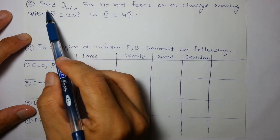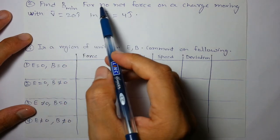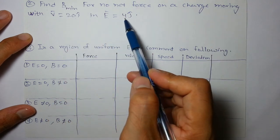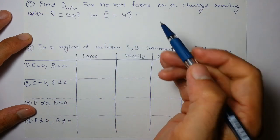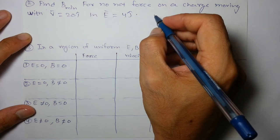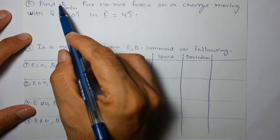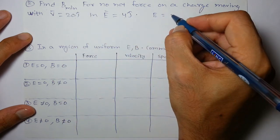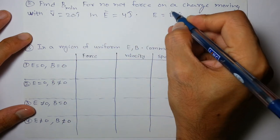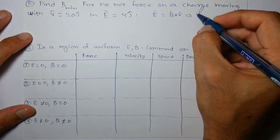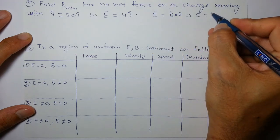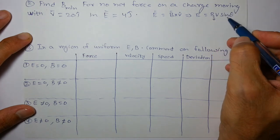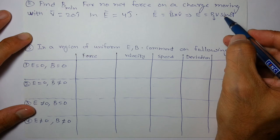In the next part, find minimum magnetic field for no net force in a charge moving with velocity, this, in electric field, this. So when the magnetic field is minimum, as we know, E is equal to B cross V. So if we take the magnitudes, E is equal to BV sin theta. For B to be minimum, sin theta should be maximum, which is 1.